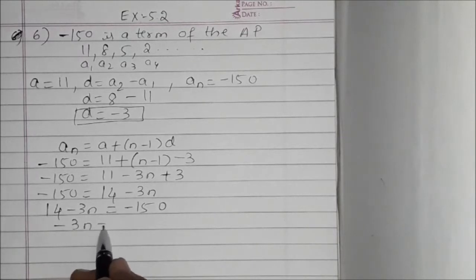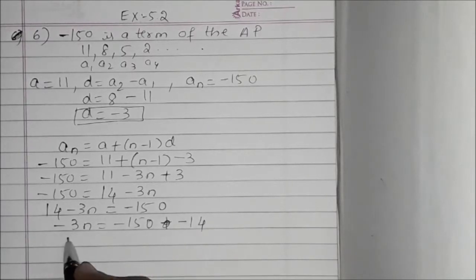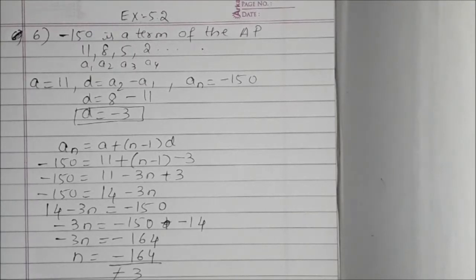Minus 3N equals minus 150—it will become minus 14. Minus 3N equals minus 164. Now N will be minus 164 by minus 3, minus minus cancel.